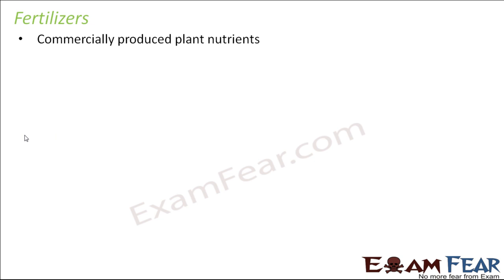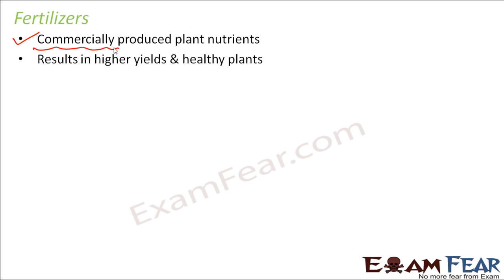Fertilizers are commercially produced plant nutrients. The only difference is that manures are produced in fields from waste plant and animal products, whereas fertilizers are produced in factories on a commercial scale and basically contain chemicals — they are not produced from plant and animal based sources. They result in higher yield and healthy plants because these fertilizers are very rich in plant nutrients. If you compare manures and fertilizers, the yield or productivity in a field given fertilizer is more because fertilizers are more rich in plant nutrients.